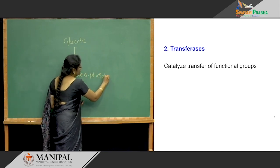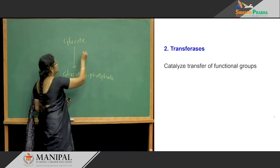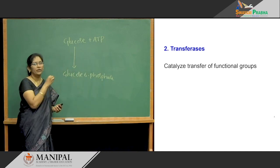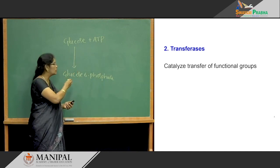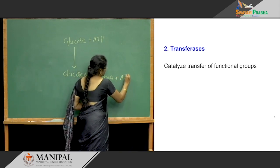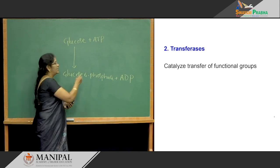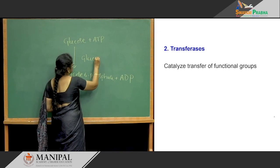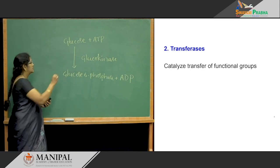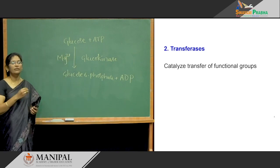How is glucose converted into glucose-6-phosphate? The main phosphate donor to glucose is ATP. ATP is mainly donating or transferring one phosphate group to glucose, so glucose is converted into glucose-6-phosphate, and ATP is converted into ADP. The enzyme catalyzing this reaction is glucokinase, and magnesium is required as a cofactor. This is the example for transferases.